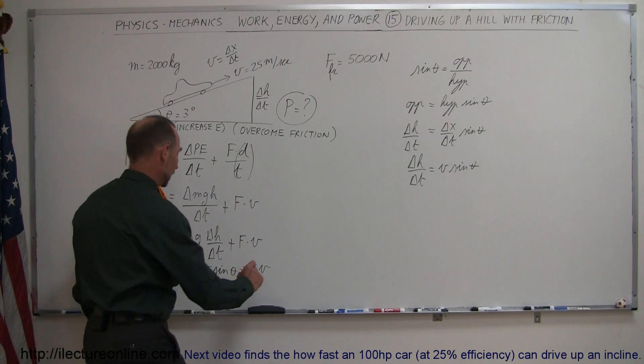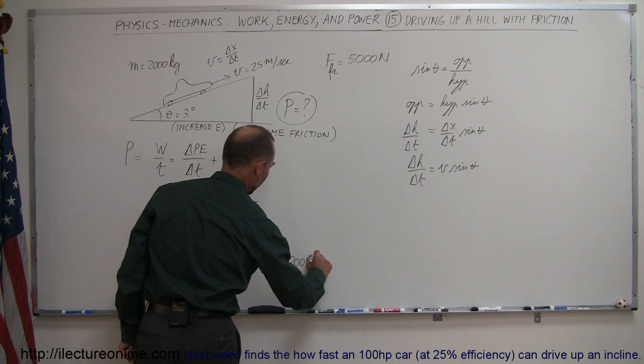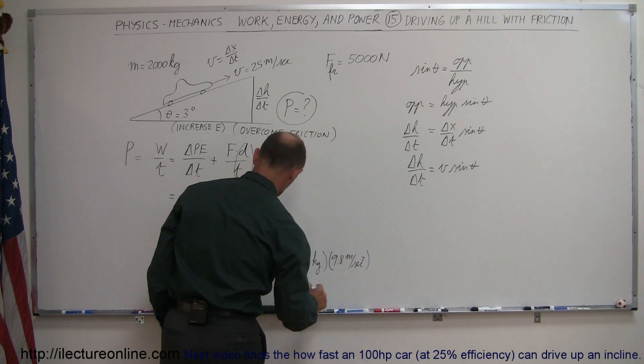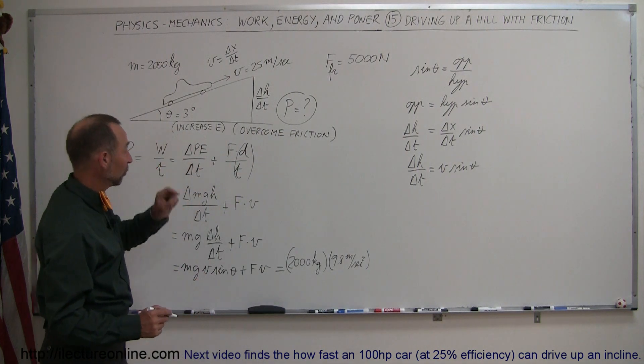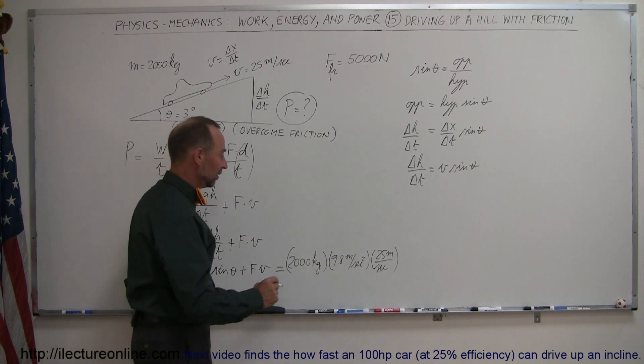Now we're ready to plug in the numbers. And so this is equal to the mass of the car, 2,000 kilograms times G, which is 9.8 meters per second squared, multiplied times the velocity of the car, 25 meters per second, then multiplied times the sine of the angle, sine of 3 degrees.